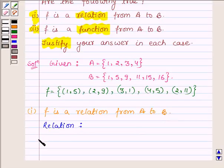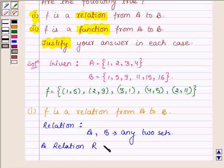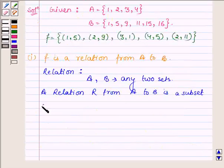Suppose we have any two sets A and B. A relation R from the set A to B is a subset of the Cartesian product of A and B, which is obtained by describing the relationship between the first element and second element of the ordered pair A cross B.